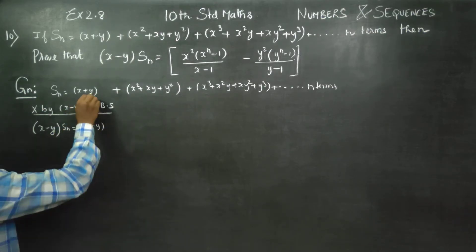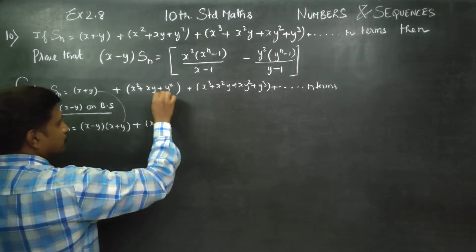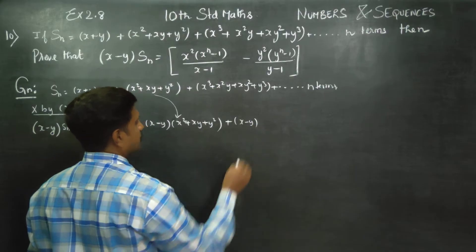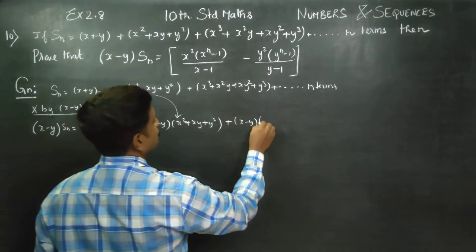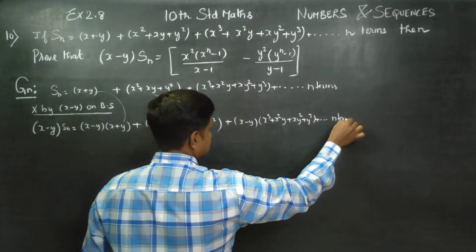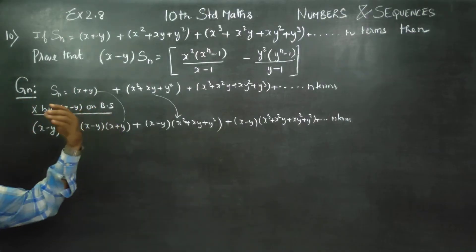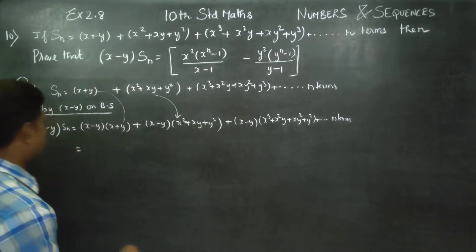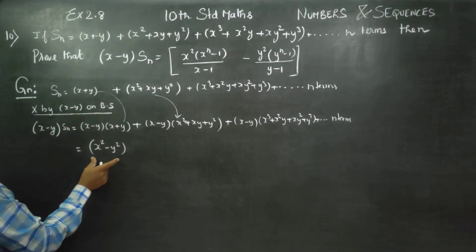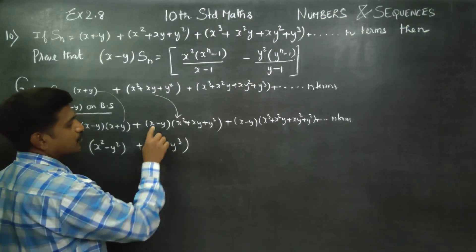Now we have the original x plus y and x minus y. Using the identity: a minus b into a plus b becomes a squared minus b squared. Then x minus y into x squared plus xy plus y squared becomes a cubed minus b cubed.